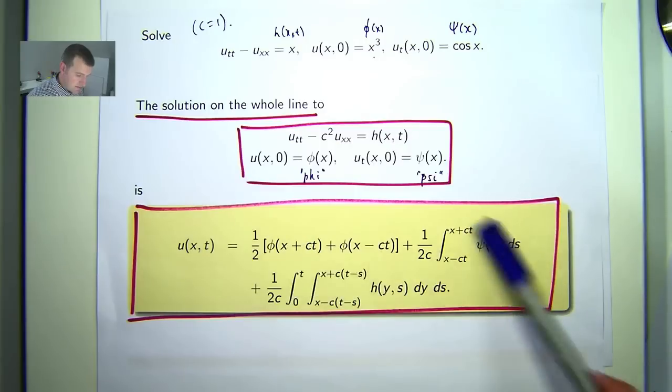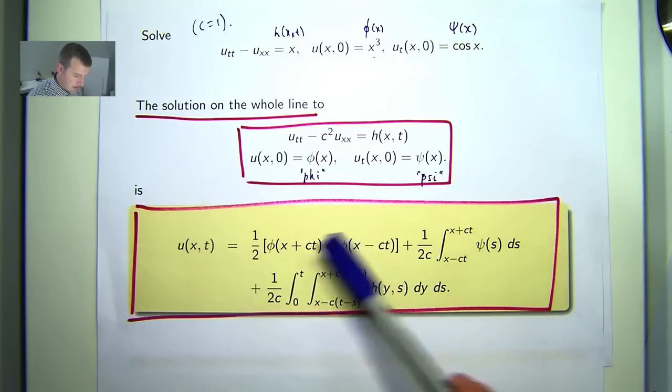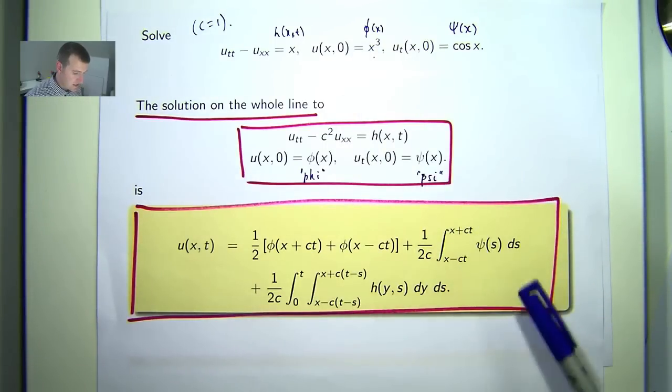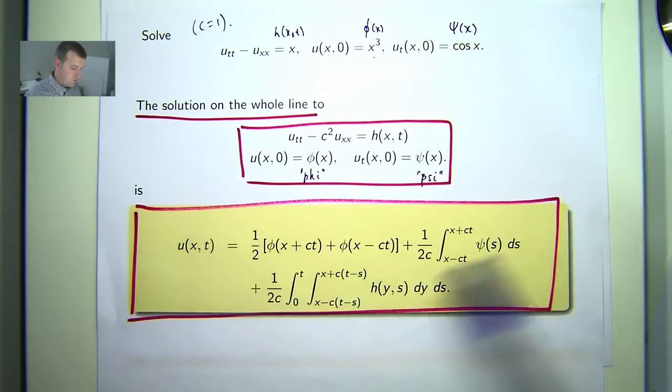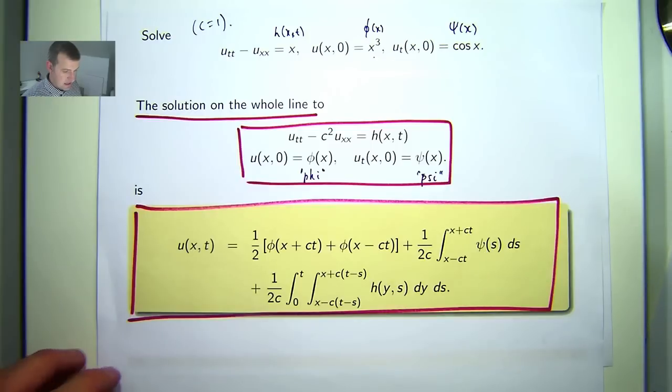Okay, so we're just going to essentially write this out with c equals 1, a given phi, a given psi, a given h, and then we're going to perform the integrals and compute the solution.